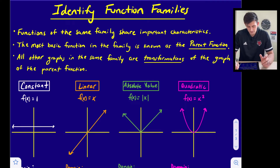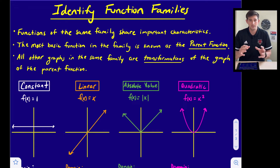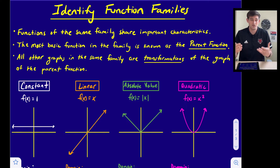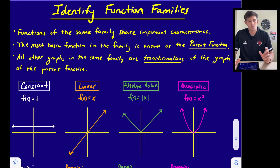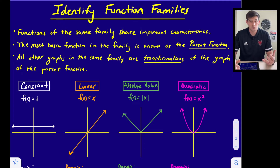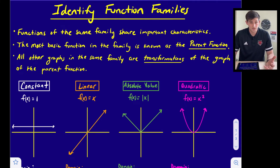The most basic function in the family is known as the parent function — basically the most simplified version of the type of function you're talking about. All other graphs in the same family are transformations of the parent function. Some transformations you might see are a vertical or horizontal stretch or shrink, a vertical or horizontal translation, or a reflection.